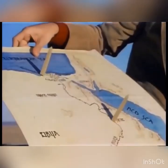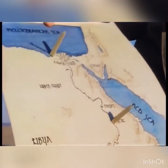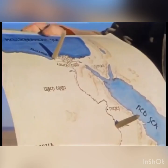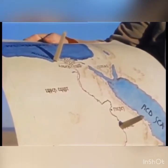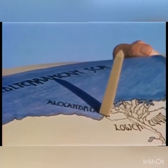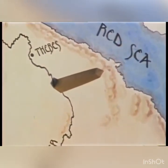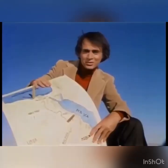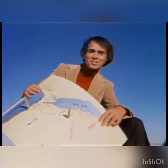But how could it be, Eratosthenes asked, that at the same instant there was no shadow at Syene and a very substantial shadow at Alexandria? The only answer was that the surface of the Earth is curved.